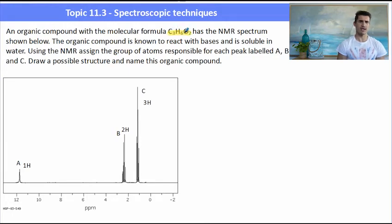Here we have another organic compound with the formula C3H6O2. We are told that it reacts with bases and is soluble in water and we need to work out what the peaks A, B and C are. If it reacts with a base, that means it's most likely to be an acid. So when I think of an acid, I think of the carboxy functional group, the COOH.